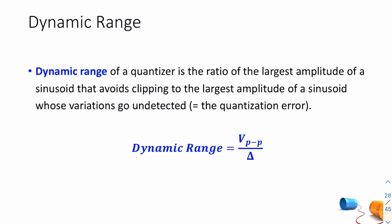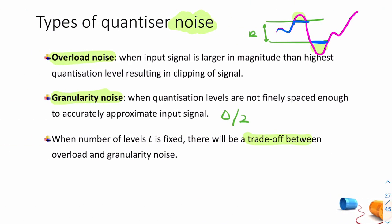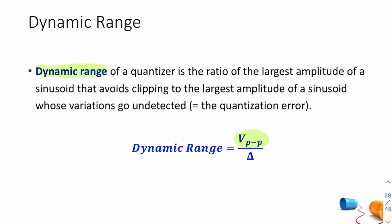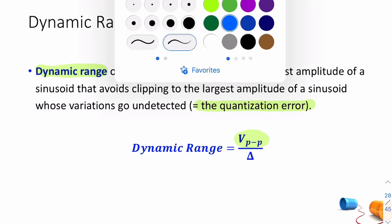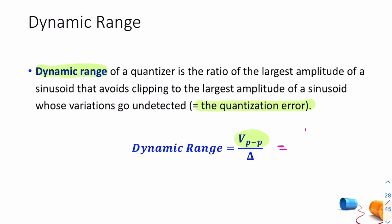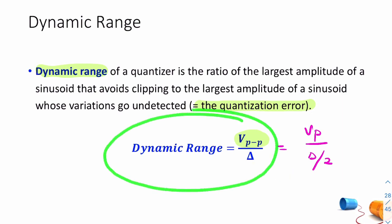More formally, dynamic range is the ratio of the largest amplitude of a sinusoid that avoids clipping to the largest amplitude of a sinusoid whose variation goes undetected — i.e., the quantization error. Strictly speaking, it's V-peak divided by delta over 2, and because V peak-to-peak is twice V-peak and delta is twice delta over 2, we can use the V peak-to-peak over delta shorthand.